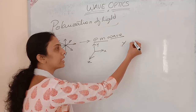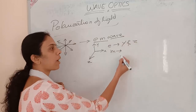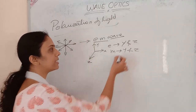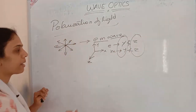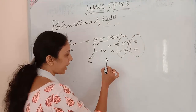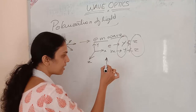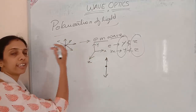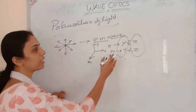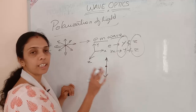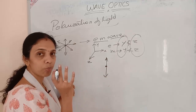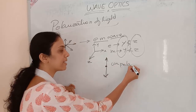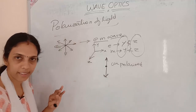If I divide the electric vector into y and z components, and similarly resolve the magnetic vector into y and z components, then superposing these waves gives components along the y and z directions. I represent this as vibrations in two directions — one in the plane of the paper and one perpendicular to it. This is the representation of unpolarized light, where the electromagnetic wave has components in two directions.